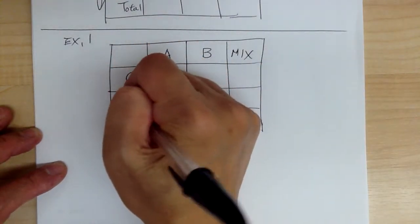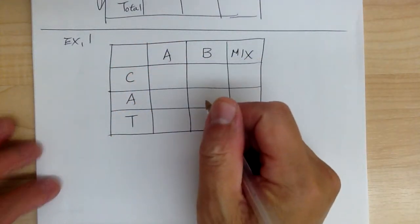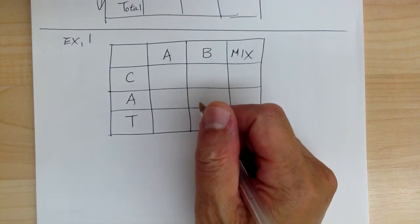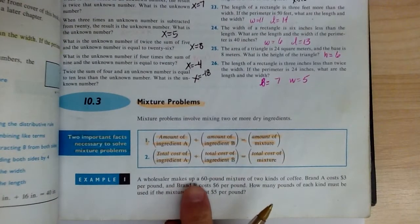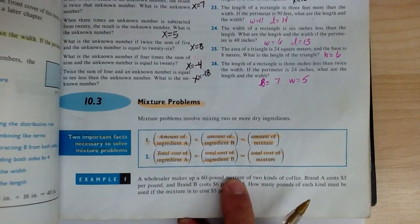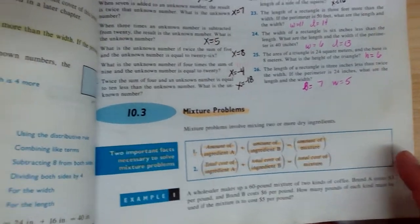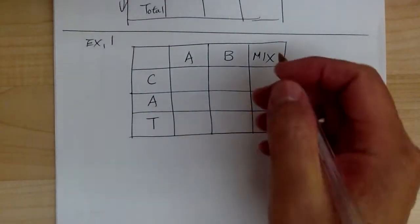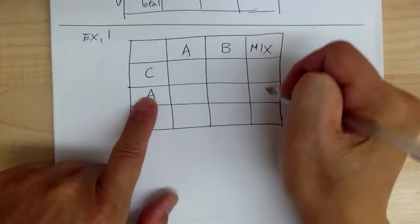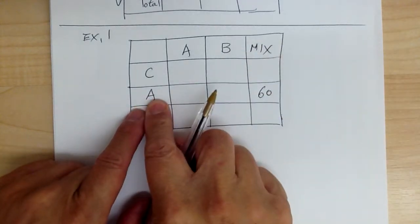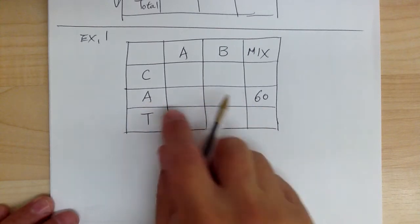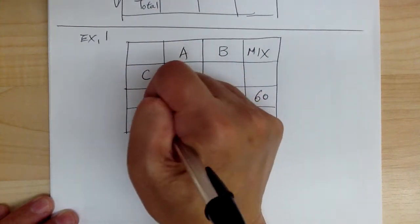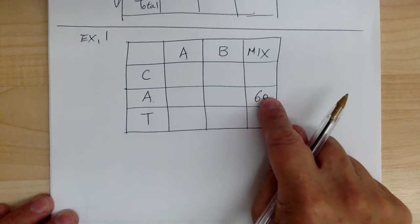Here is your C, A, T layout. Reading the problem: it says 60 pounds of mixture, so that's the amount for the mix — put 60 in the A row under mix. A is for amount: how many pounds, how many ounces, and so forth. So the mix amount is 60.